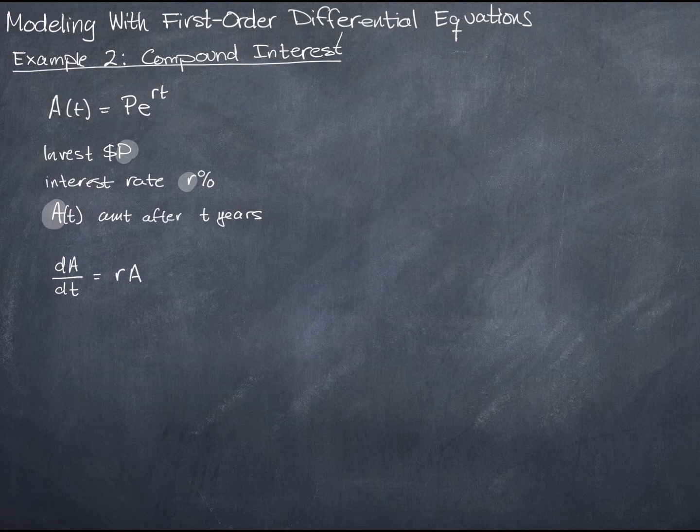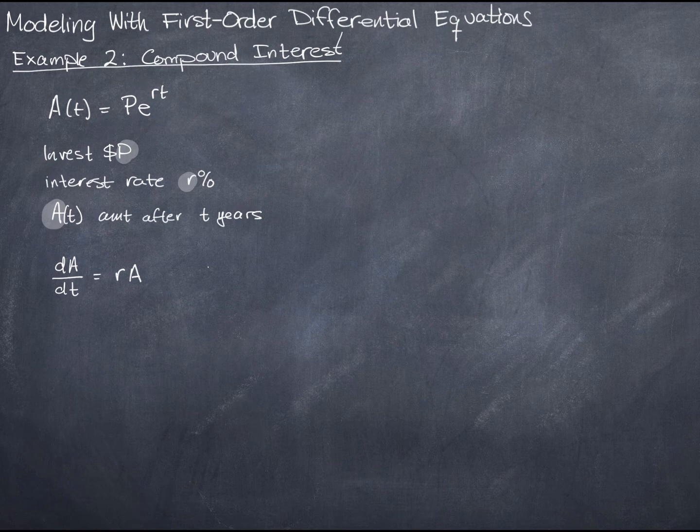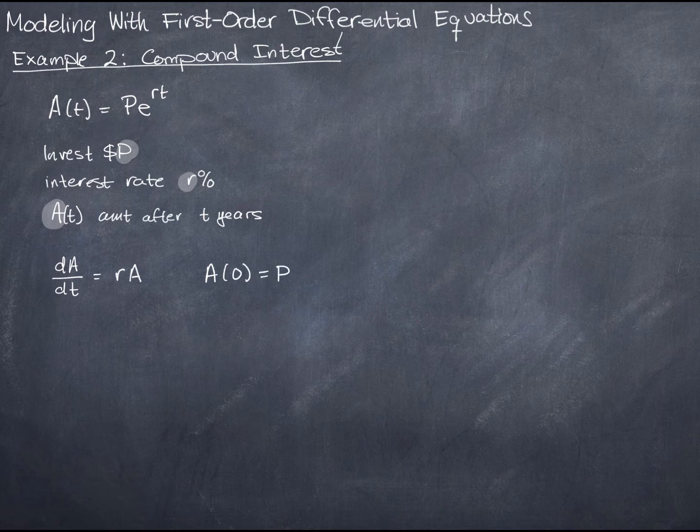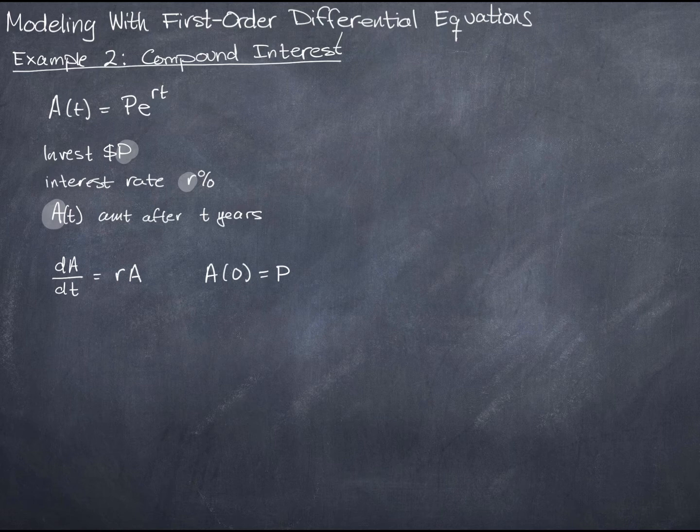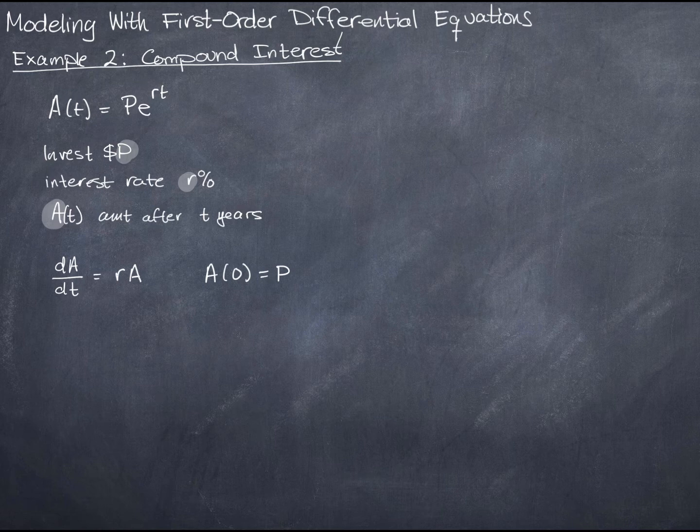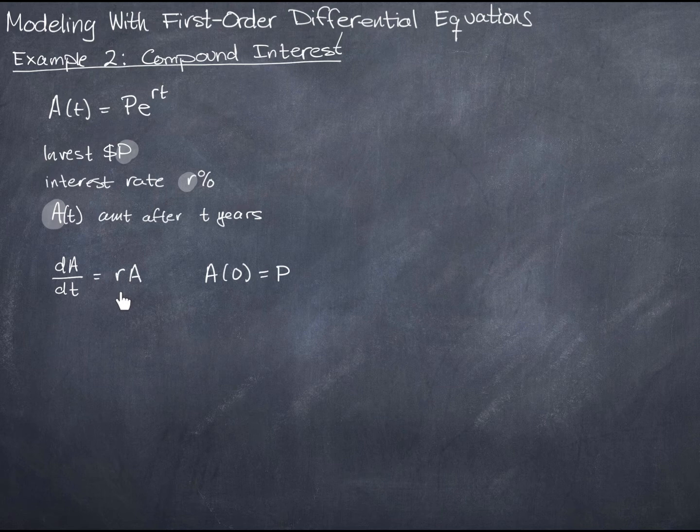Well, we also know something about what happens at the beginning. We know that the amount in the account at time 0 is equal to P. So what we have here is a very simple initial value problem. It looks like this is separable. I could also use an integrating factor, but it's a separable equation, so I'm going to treat it that way.